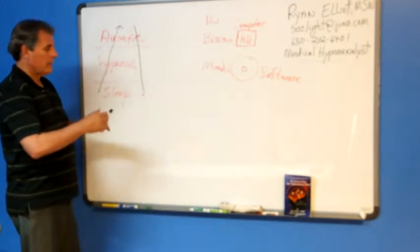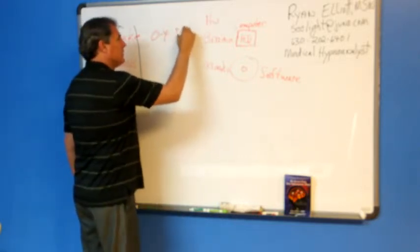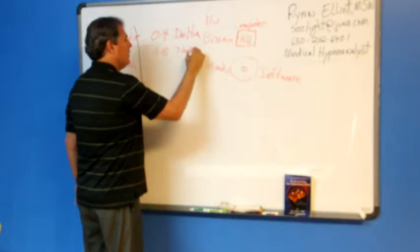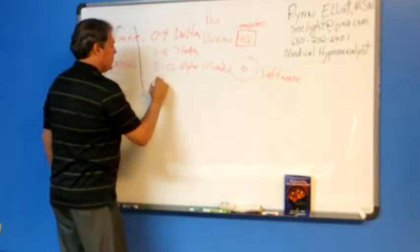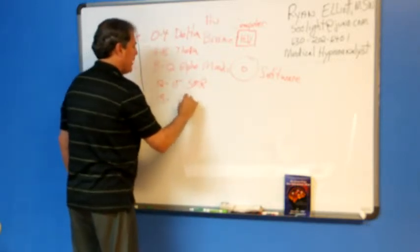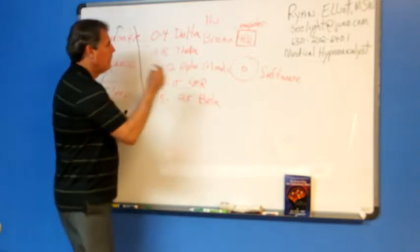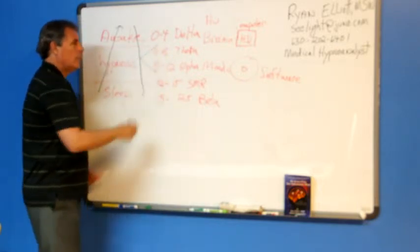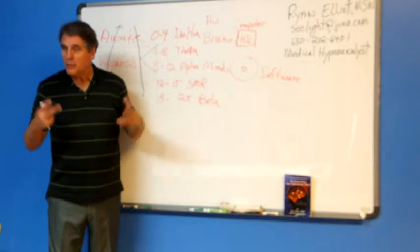So, the hundred billion neurons, they operate like this. From zero to four, this is called the delta level. From four to eight, this is the theta level. From eight to about 12, we call that the alpha level. And from 12 to 15, this is called SMR. And then from 15 up to about 25, it's called the beta level. Now, hypnosis is right here. When the brain predominantly produces from four to 12 hertz or frequencies or firings per second, then a person's in hypnosis.